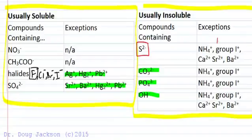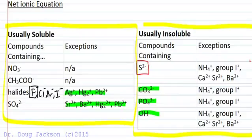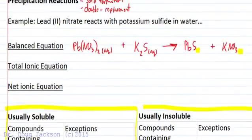Or has the exceptions of the ammonium, the group 1 cation, so sodium, potassium, we said lithium, rubidium, cesium, francium. So we've got all of those in group 1 that are exceptions. Then calcium, strontium, and barium. Well if we look at our compound here, sulfide with lead is not an exception, so it forms the precipitate. It is not soluble.